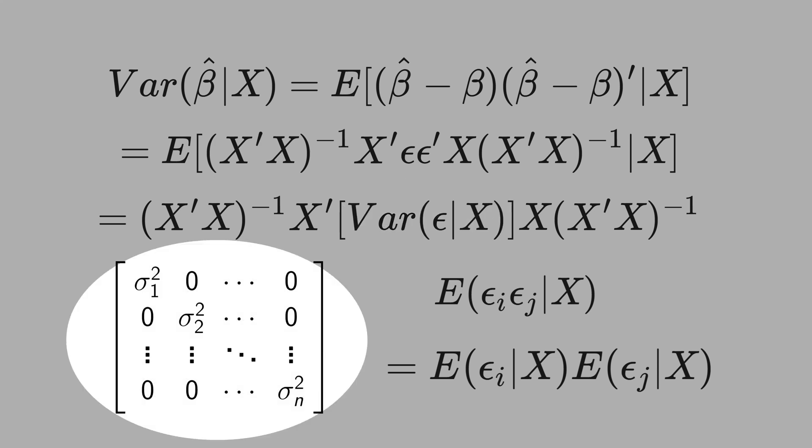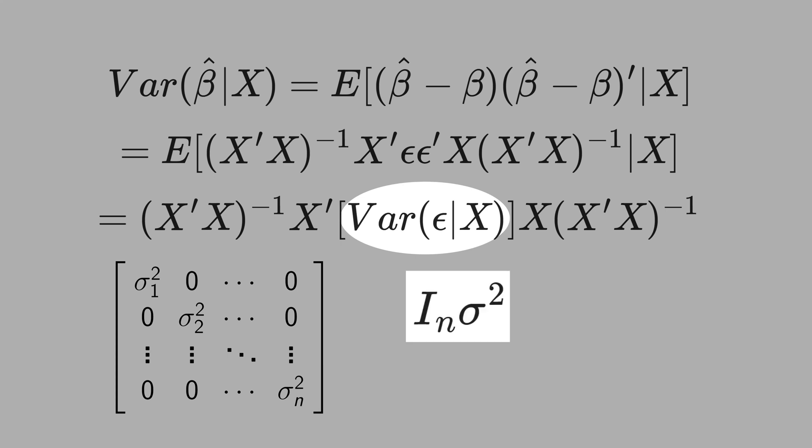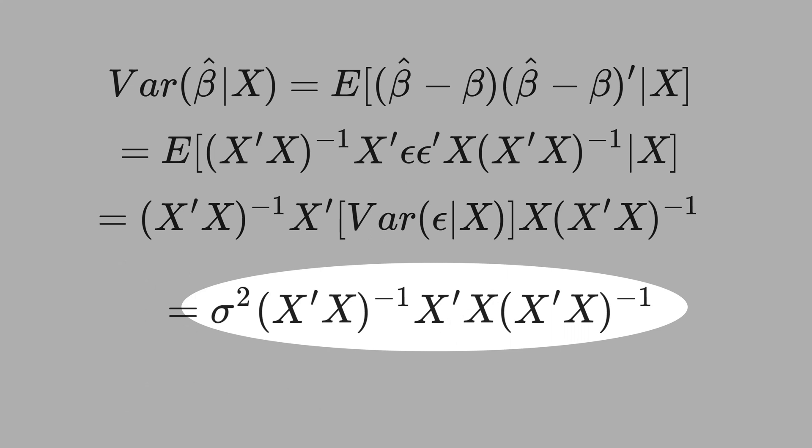Now, let's assume homoskedasticity, constant variance. We have to vanish all these subscripts to indicate that the variance is equal. Under homoskedasticity, this term here can be replaced by identity matrix times the constant variance. Then we can write this expression here. The sigma squared is the variance of the error term under homoskedasticity.